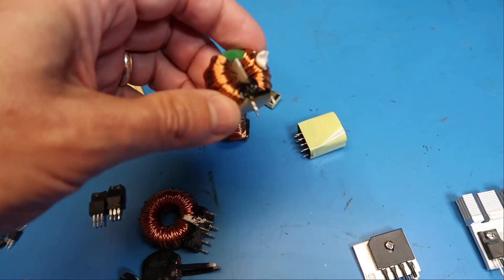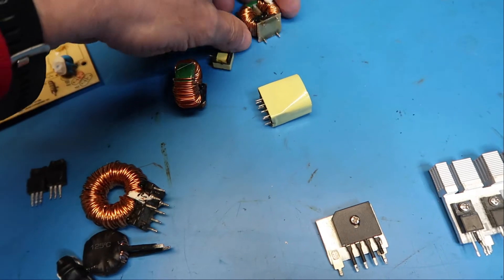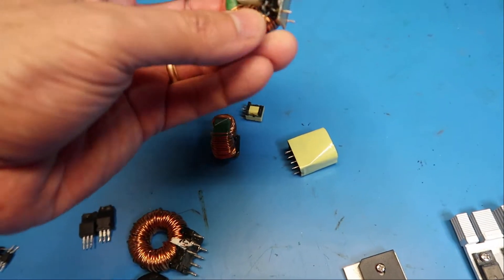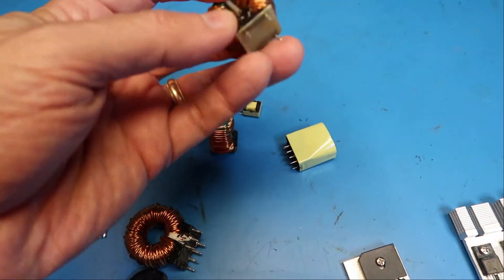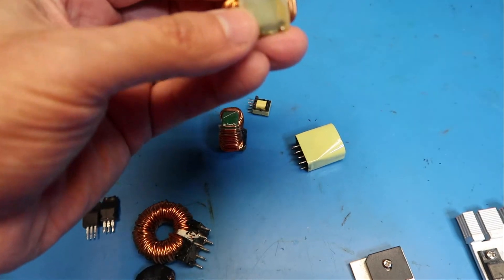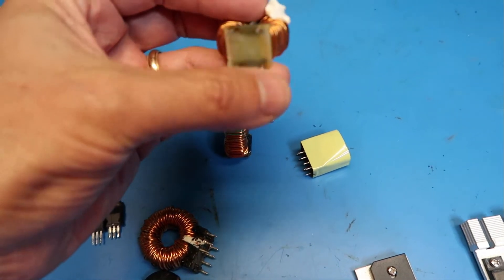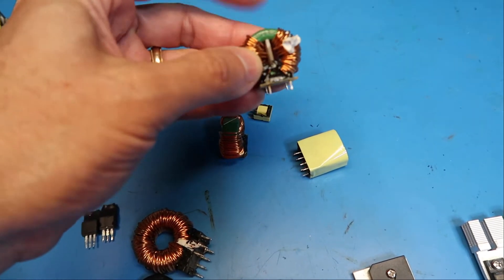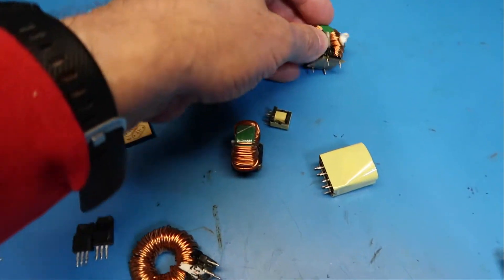These are the isolation transformers that I pointed out earlier. With a little careful inspection you can see that this side and this side are separated and connected only by the magnetic toroid here.